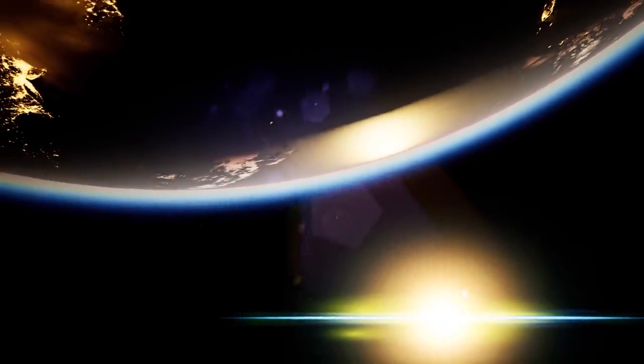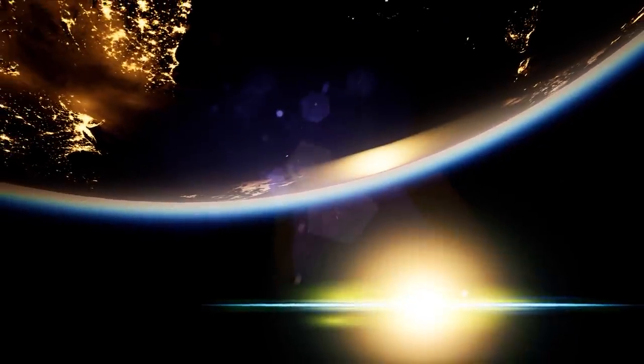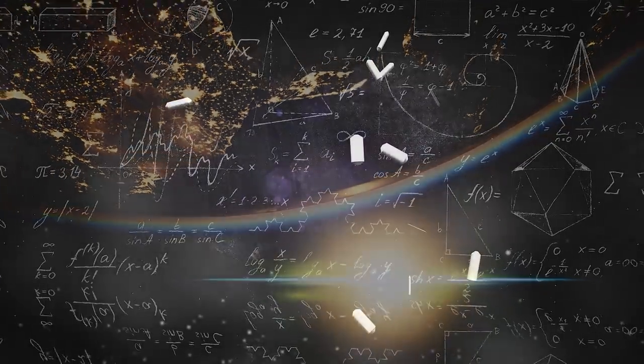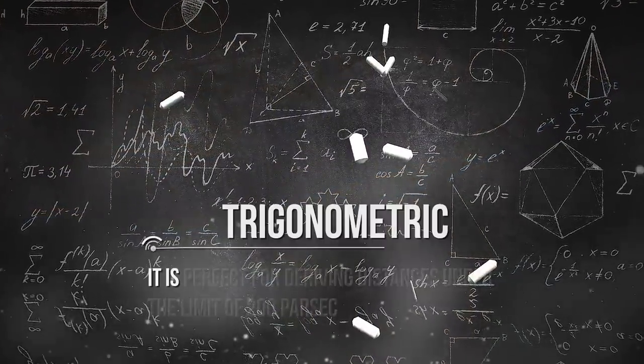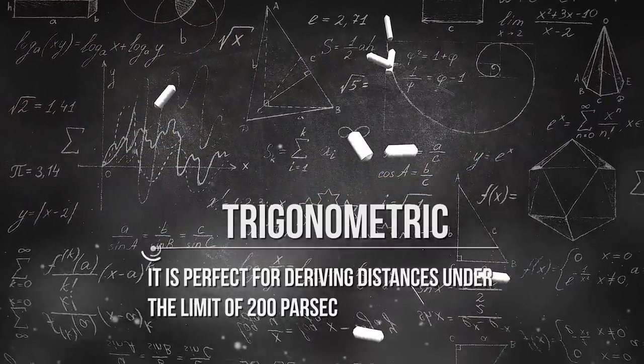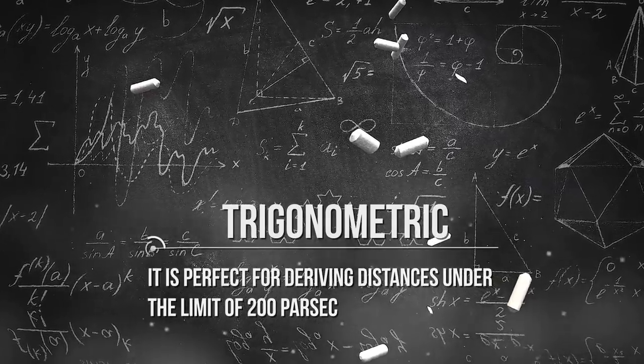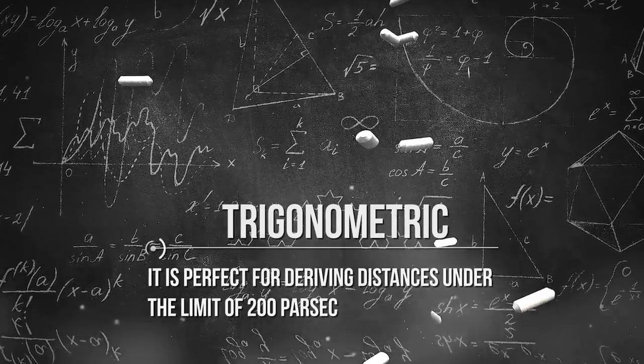Therefore, there are some different kinds of techniques that are used according to the scale of the length we want to measure. Firstly, this type of parallax we just described which is totally based on Earth's proper motion is called trigonometric and it's perfect for deriving distances under the limit of 200 parsec.